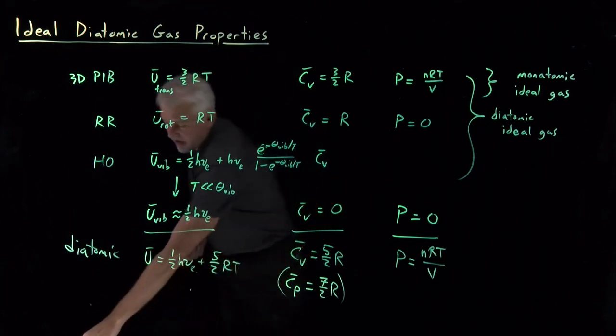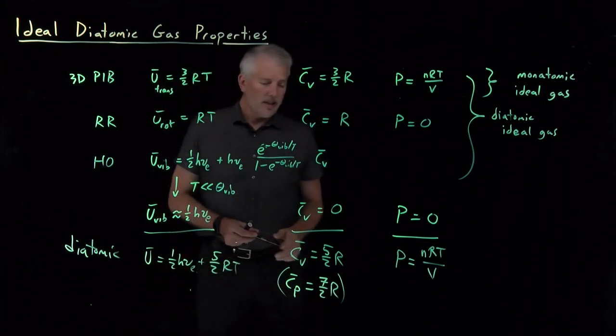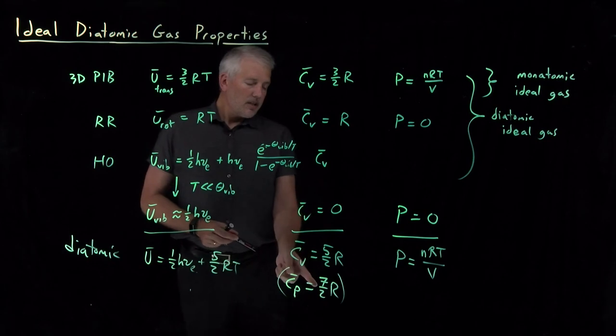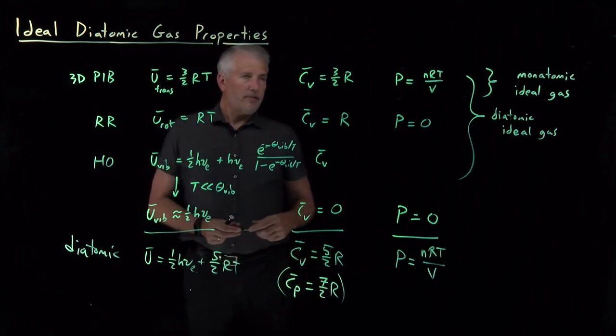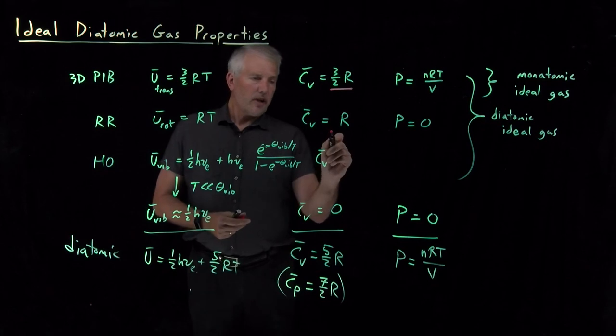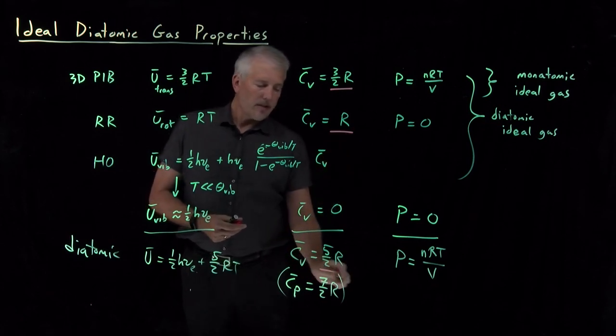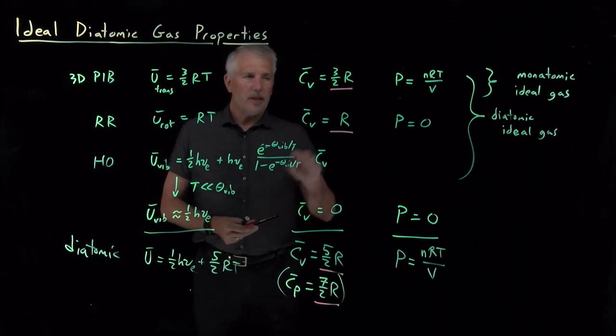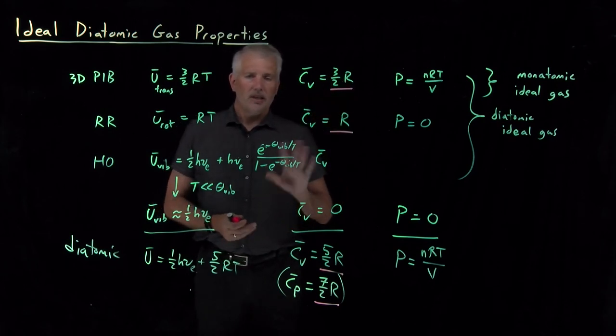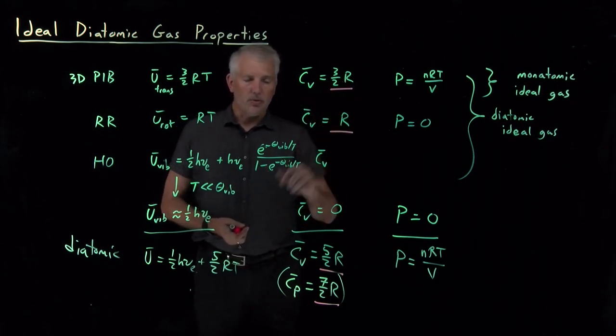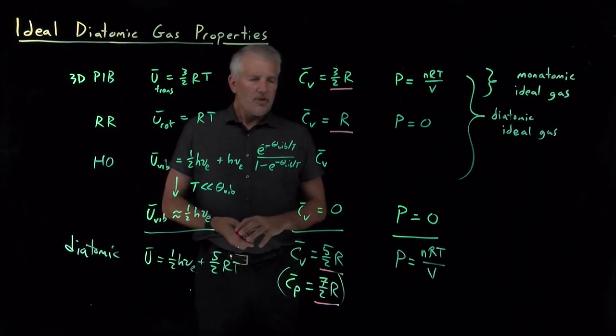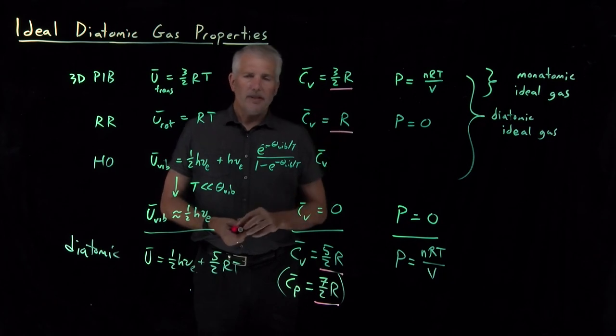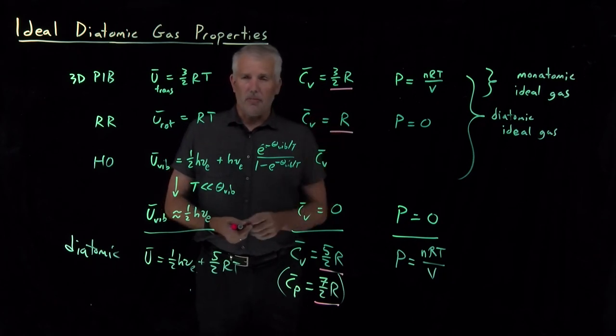It also begins to raise a new question. These heat capacities seem to always be multiples of one half R. I've either got three times one half R or I've got twice one half R. Here I've got five times one half R, seven times one half R. Heat capacities keep being equal to one half times R times some integer, three or two or five or seven. So that's an interesting puzzle to think about why heat capacities would always be a multiple of this particular number, one half R. So that's what we'll talk about in the next video lecture.